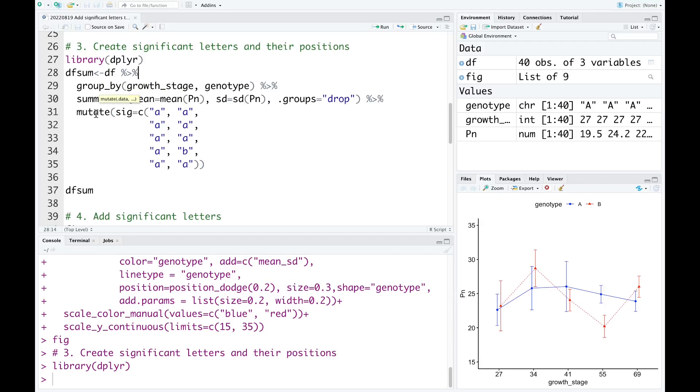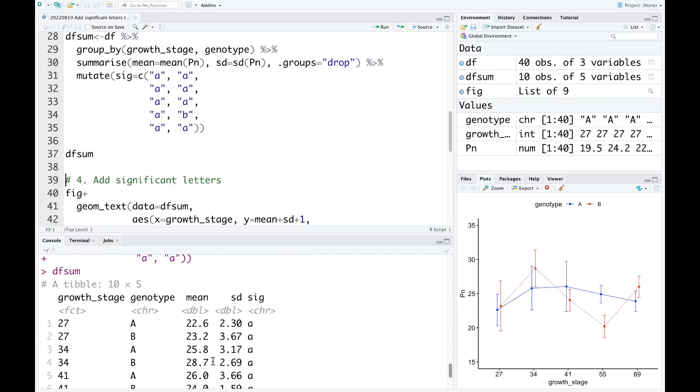After that, we create a column containing significant letters. But before that, we need to drop the groups. Now run this code. Here is the data frame that contains the growth stage, genotype, the mean and standard deviation of photosynthesis, and the significant letters.